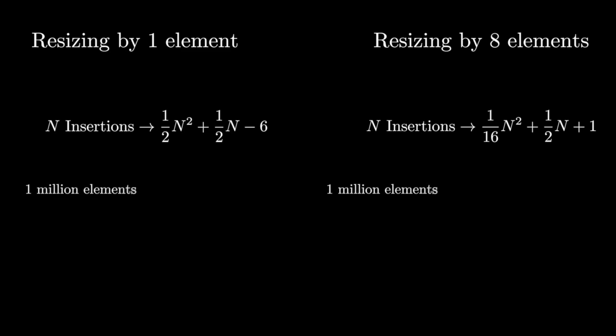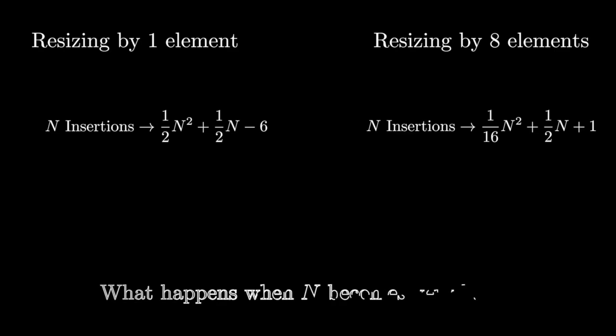Remember, for 1 million elements, we still have 62.5 billion insertions. And more generally, what happens when n becomes very large? What's going to dominate?